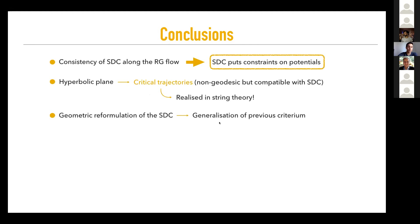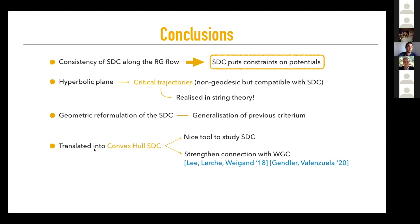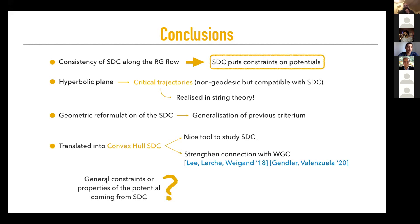Let me conclude. We have argued that consistency of the Swampland distance conjecture along the RG flow means it has to put constraints on potentials — so it is an even more powerful conjecture than initially thought. We characterized critical non-geodesic trajectories in the hyperbolic plane that are still compatible with the SDC, and checked they are realized in string theory. We gave a new geometric reformulation of the SDC generalizing the criterion to completely general cases, and translated it into the convex hull SDC — a nice tool for studying the SDC and bounds on non-geodesics, strengthening the connection between the SDC and the tower weak gravity conjecture. Two open questions: can we get general constraints on potentials from SDC consistency, and can we better understand the extremal region for the convex hull SDC?